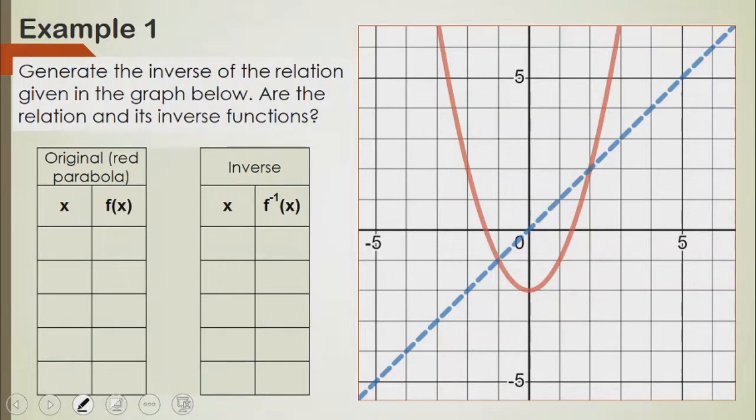Example one. We need to generate the inverse of this red parabola. The first thing to do is to pick five points on this parabola.